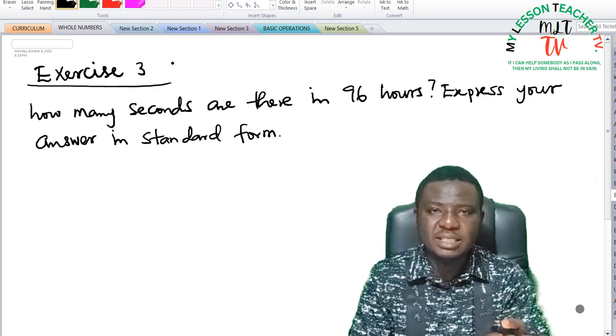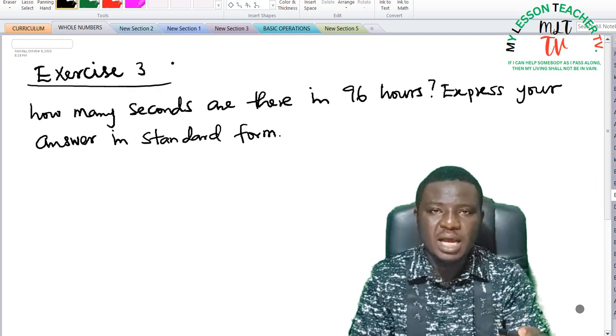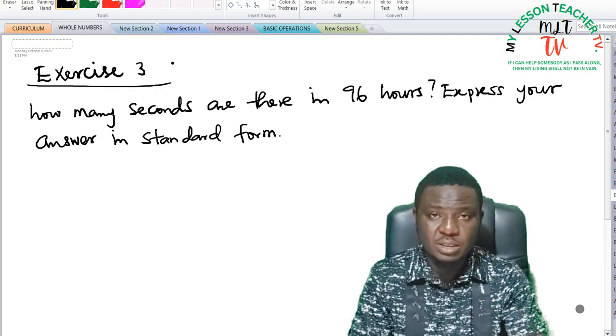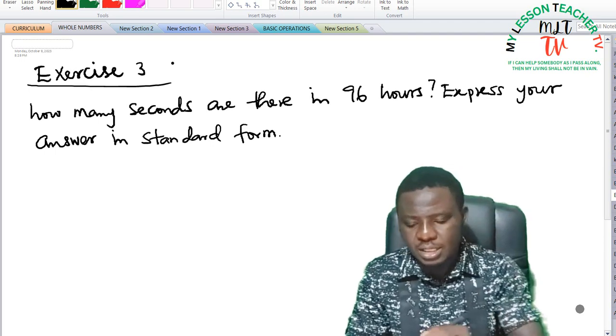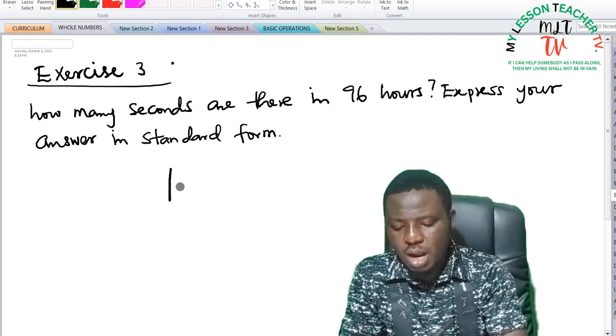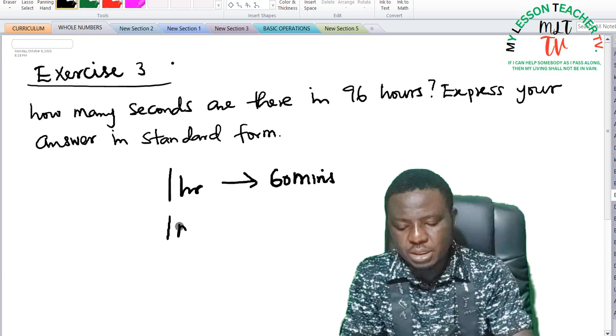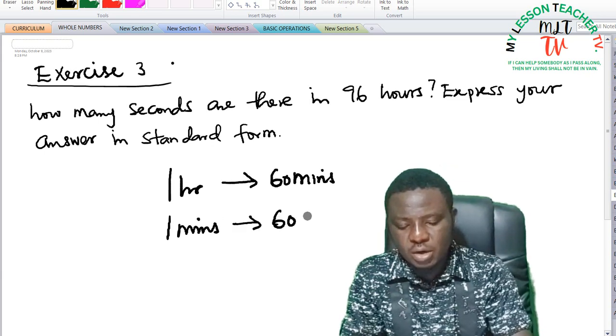For we know that 60 seconds makes one minute and 60 minutes make one hour. So we can use that conversion in converting from hours to minutes and from minutes to seconds.